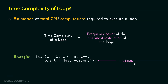What is the time complexity? The time complexity is O(N). The time complexity of this entire loop depends on the frequency count of the innermost instruction, which is N. Therefore, the time complexity of this loop is O(N). In this way, we learned how to find the time complexity of a loop. This is an example of a single loop. We will now discuss time complexity of single loops further, and then move to the time complexity of nested loops.